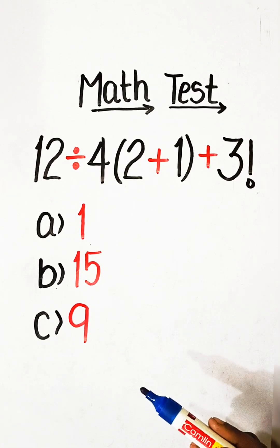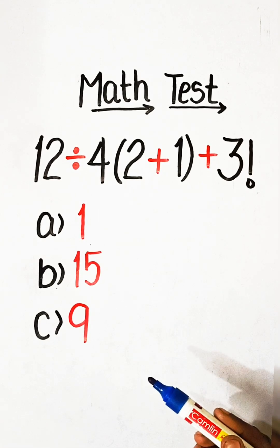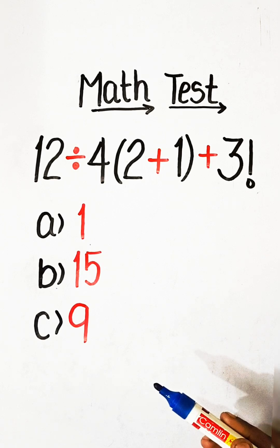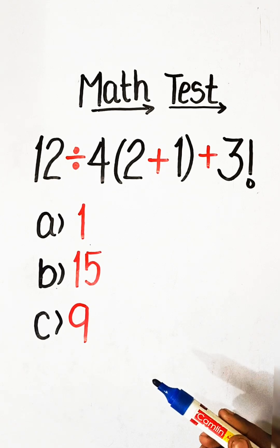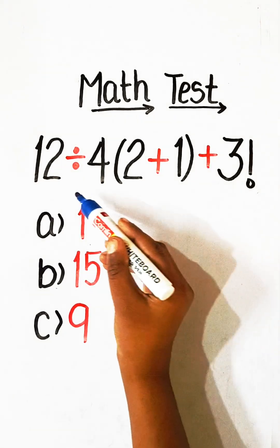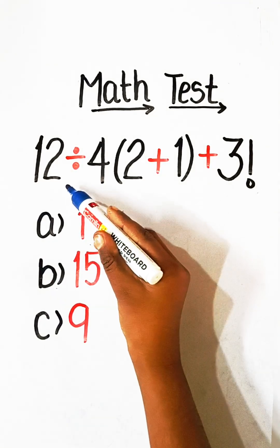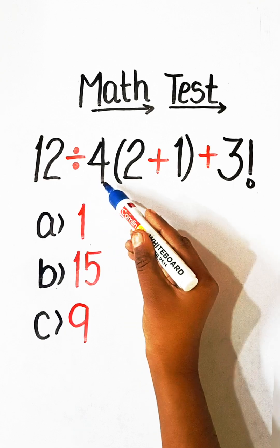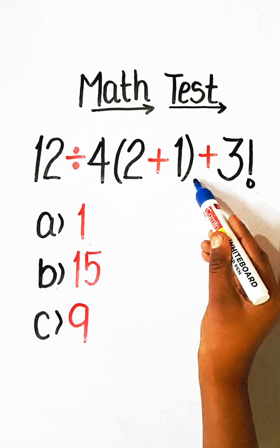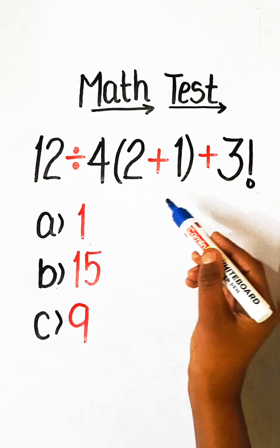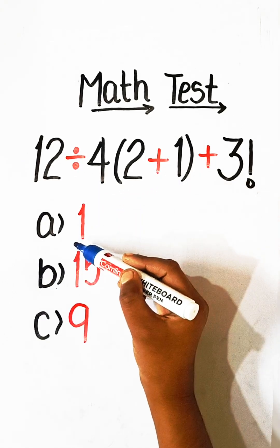Hello everyone, welcome back to my YouTube channel. In this video, we will solve this basic math problem: 12 divided by 4 under bracket 2 plus 1, plus 3 factorial, equals to what?